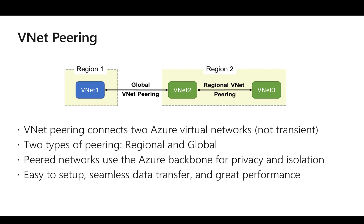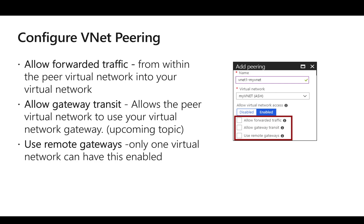Whenever we try to configure VNet peering, there will be three settings available. One is what we call 'Allow Forwarded Traffic.' If we enable this setting, it will allow the traffic forwarded from the peer network to another network. So if we want those forwarded traffics, we need to enable this setting.